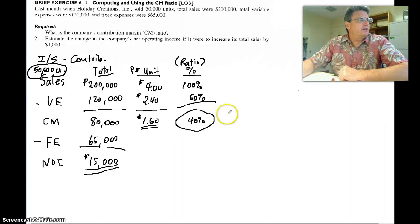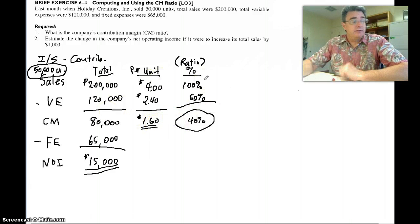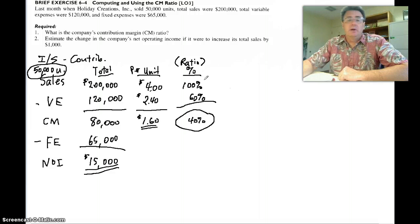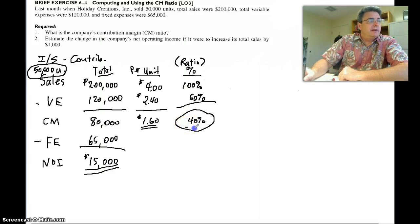Which means our contribution margin would be $1.60 per unit. In fact, did you notice that these relationships remain constant here? So $4 per unit times a 40% contribution margin. 4 times 40% is $1.60.